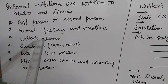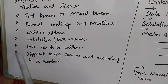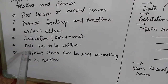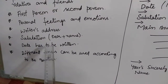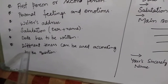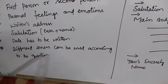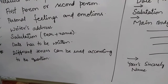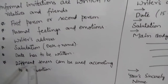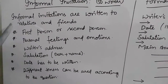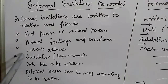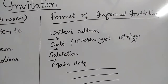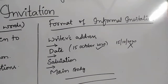Second point: personal feelings and emotions can be expressed. Next point: writer's address — we have to write the writer's address in the invitation letter. Next: salutation is a must. After that, the date has to be written. Different tenses can be used according to the question. These are the points about informal invitation. Now I will explain the format of informal invitation.